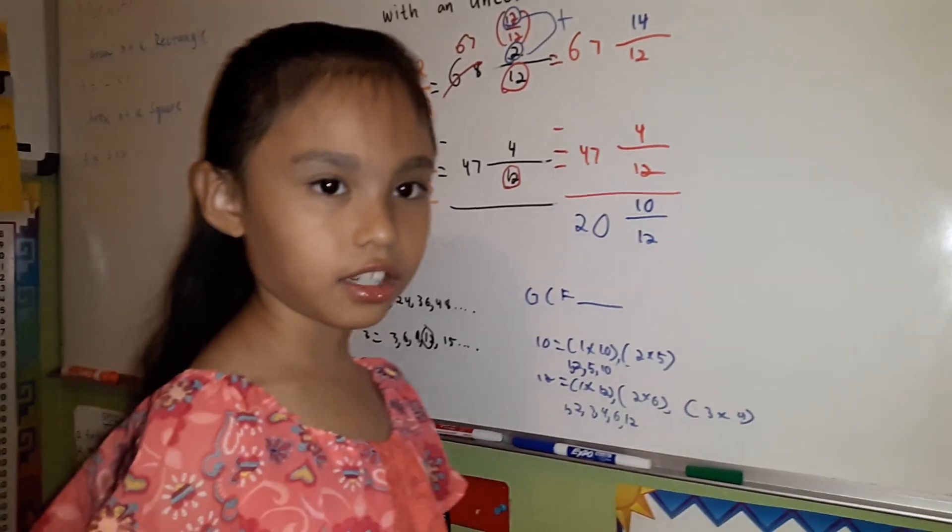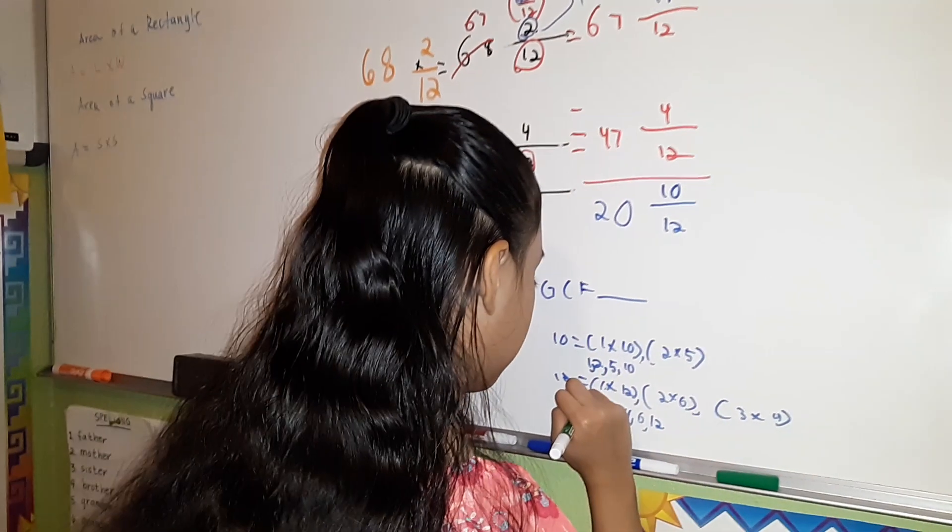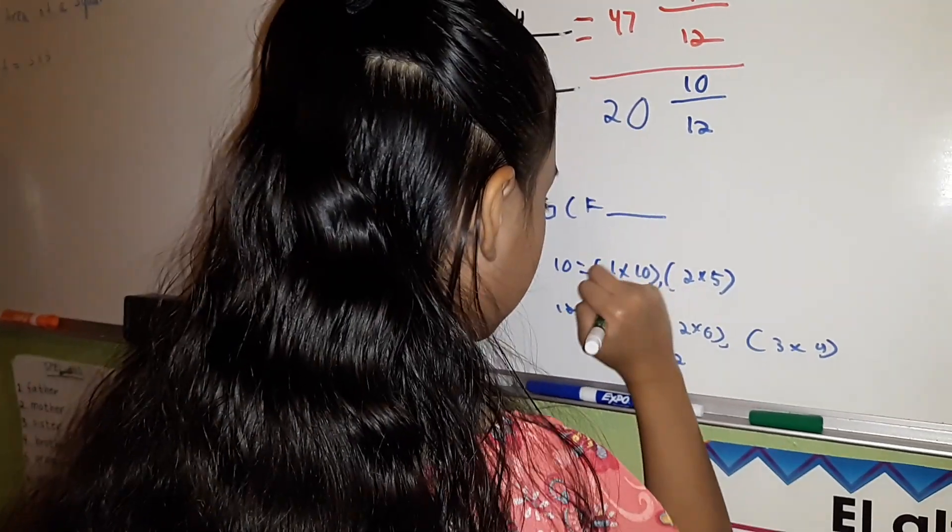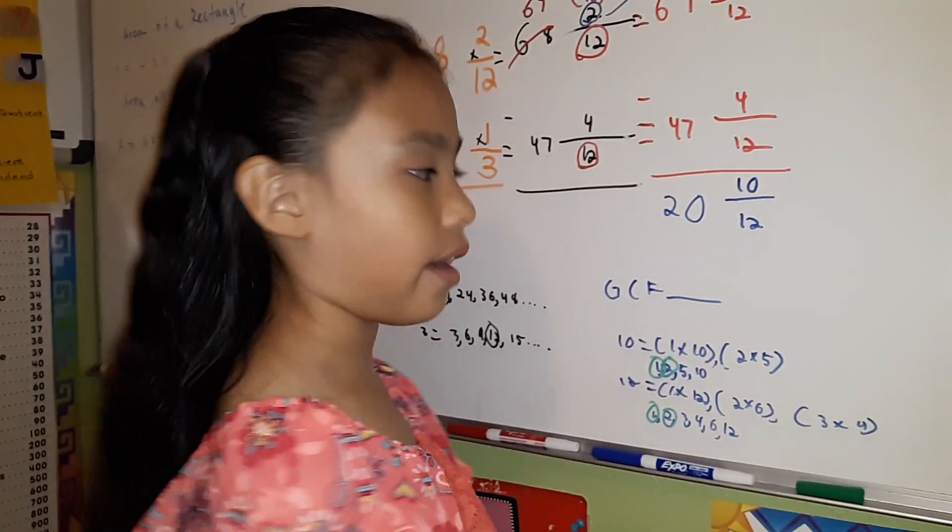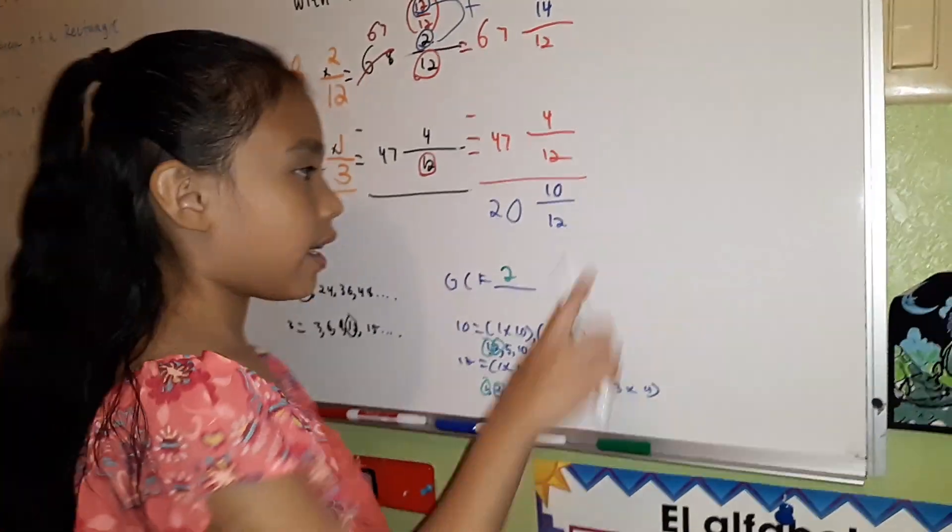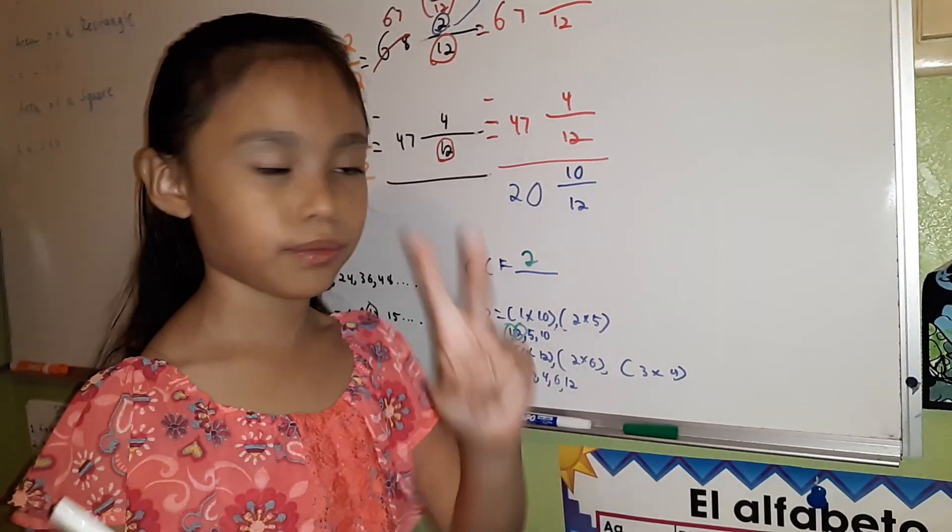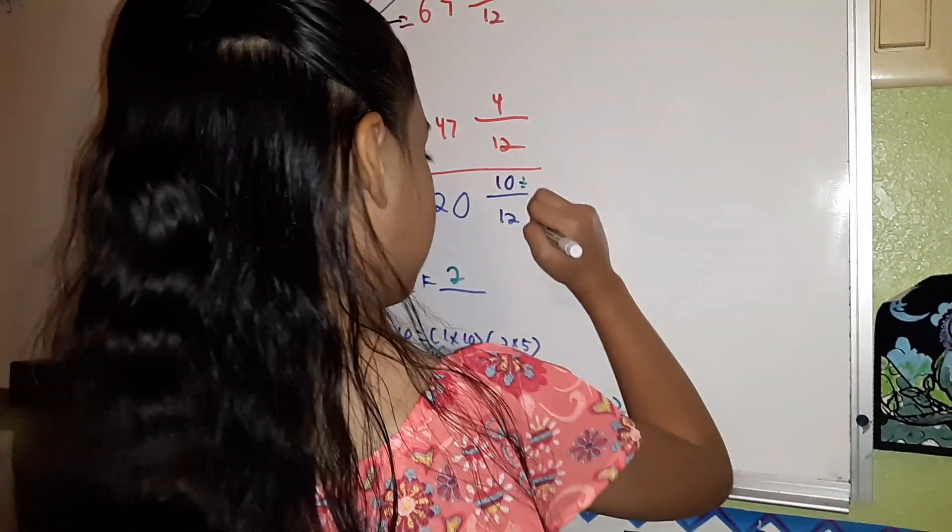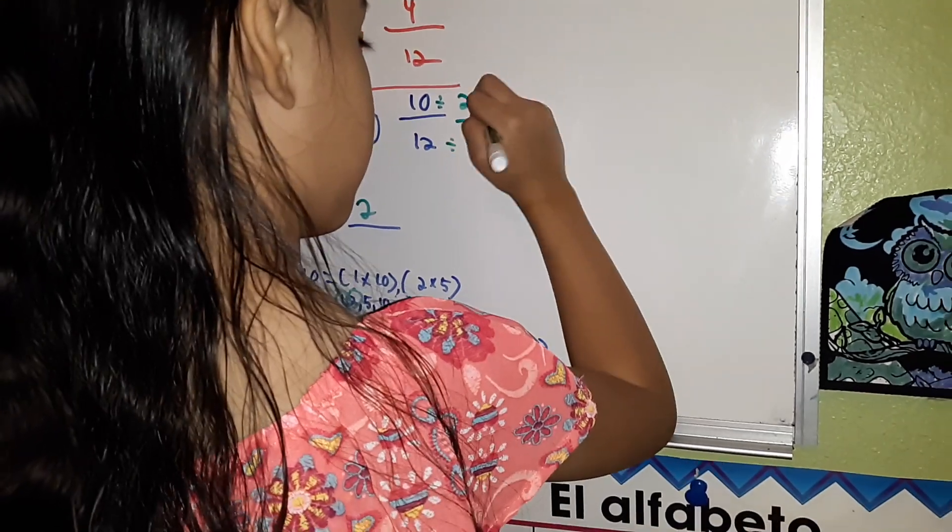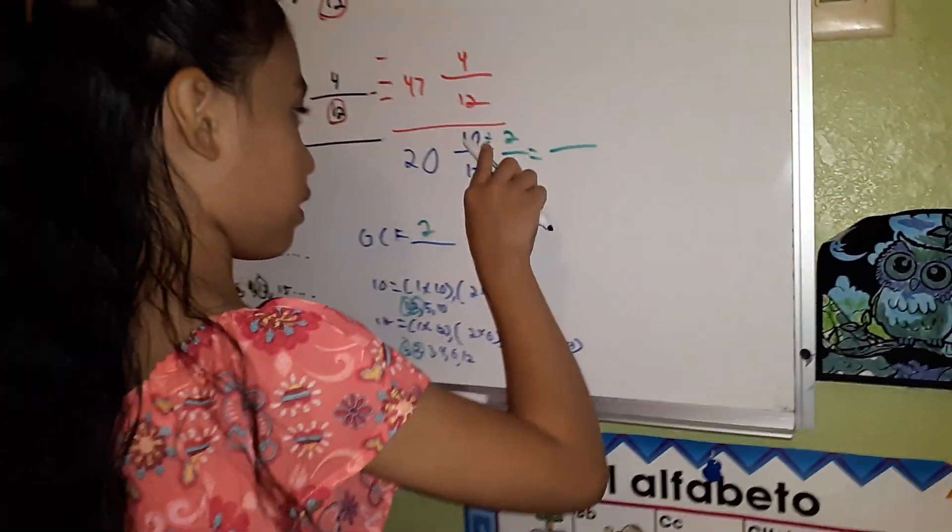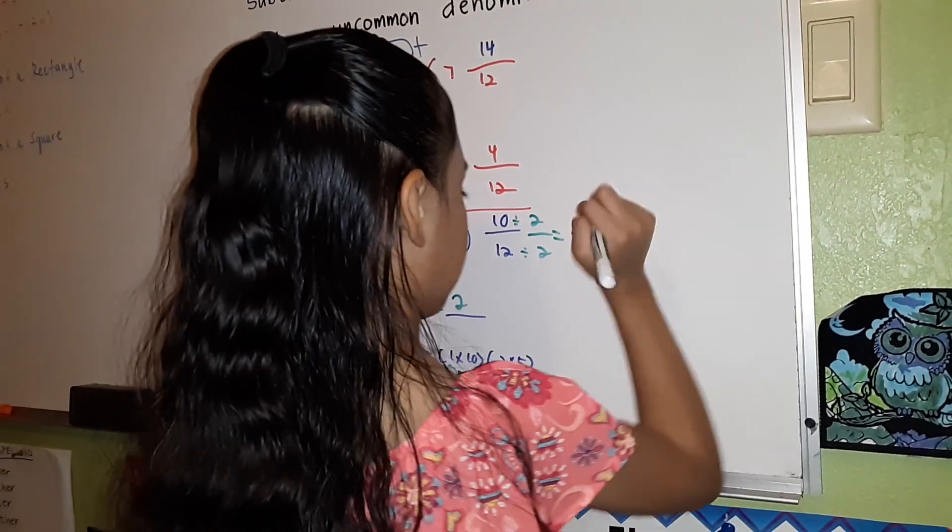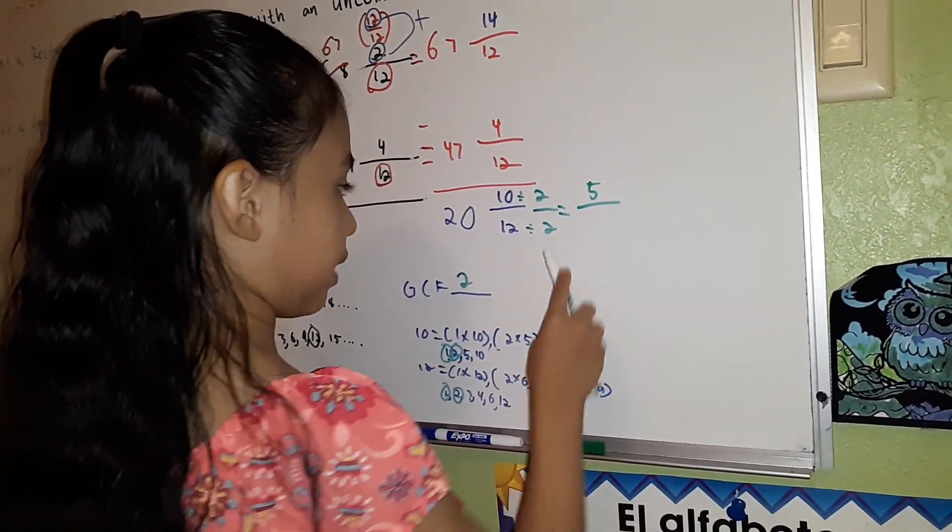I'm going to write down our common factors: 1 and 2. 2 is our GCF. We're going to divide 10/12 by 2. 10 divided by 2 equals 5. 12 divided by 2 equals 6.